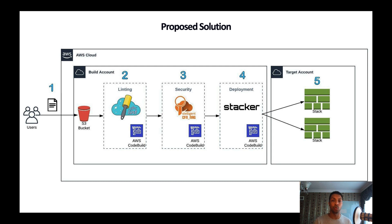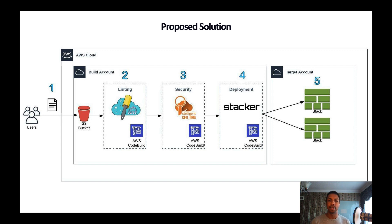In the build account, where your pipeline is going to live, the pipeline is going to have four stages. The first stage is the source, where the pipeline gets the code from. The second stage is linting, and we're going to be using a tool called cfn-lint. The third stage is security, and for that we're going to be using cfn-nag. The fourth stage is deployment, and we're going to be using Stacker.